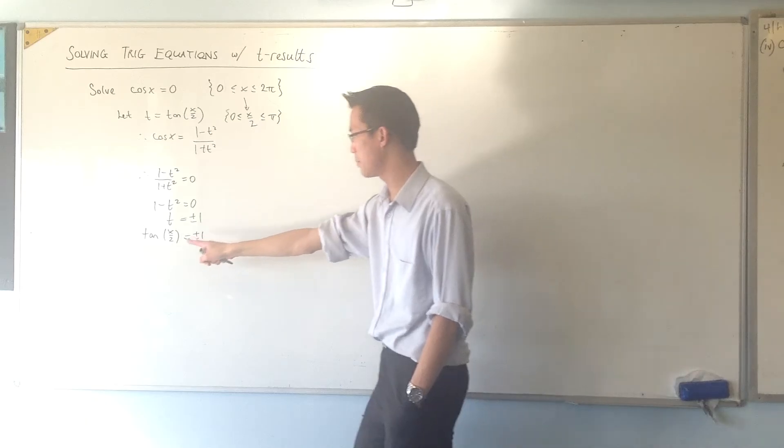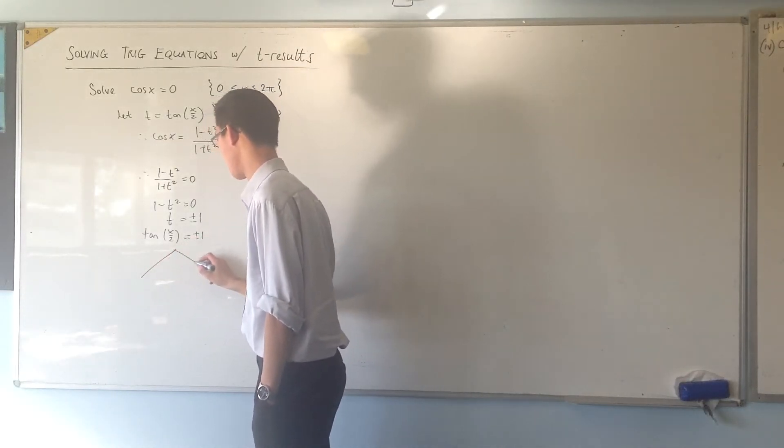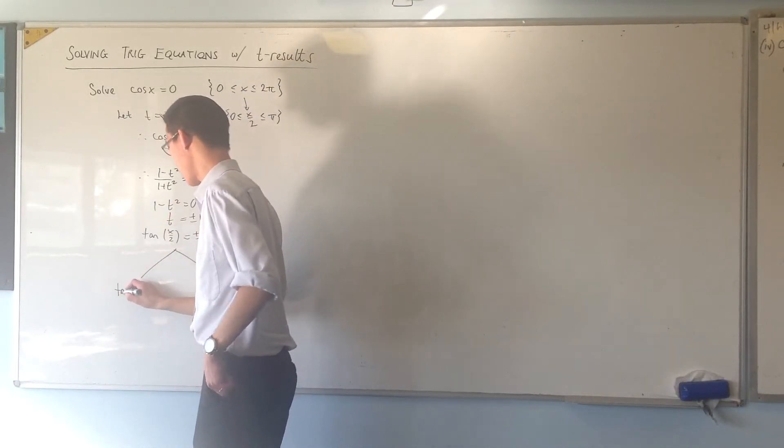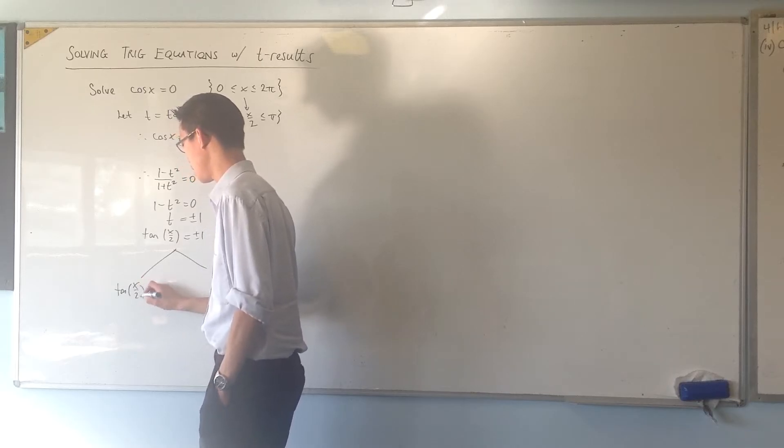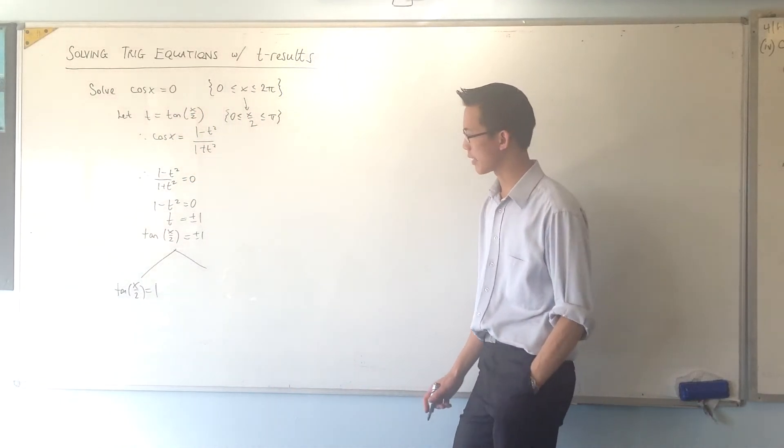All right, now, come down to here. Let's branch this off a little bit. Tan of x on 2, we'll start with the easy one first. Let that equal to 1.